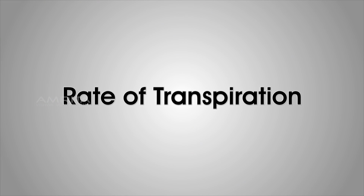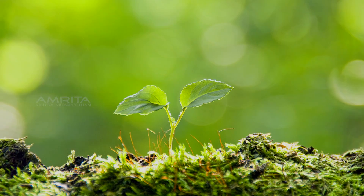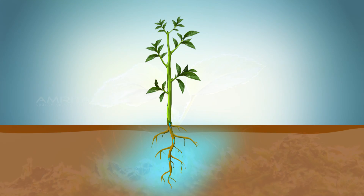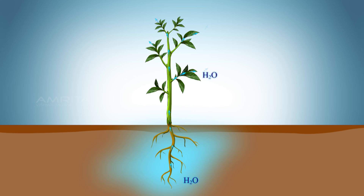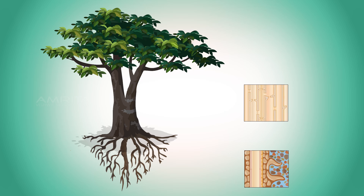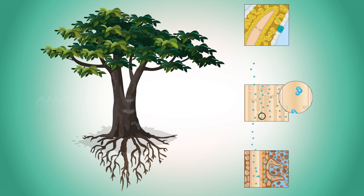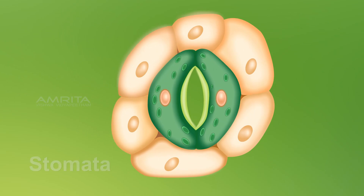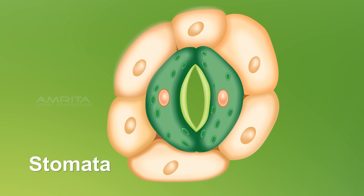Rate of Transpiration. Transpiration is the process of evaporation of water from the aerial parts of the plants such as leaves, stem and flowers. Transpiration plays an important role in the life of plants as it provides the forces or tension to pull water and mineral ions up the xylem vessels from the roots to the leaves. Transpiration occurs chiefly through the stomata of the leaves.